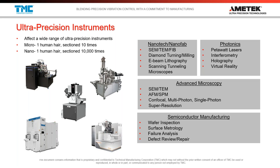Here are some examples of ultra-precision instruments we're talking about. In the nanotech and nanofab field, we have scanning electron microscopes, transmission electron microscopes, NMRs, and advanced microscopy equipment like confocal and single photon microscopes. In photonics, we have petawatt lasers and long light path experiments. In semiconductor manufacturing, wafer inspection and failure analysis instruments are commonly used. When we talk about the size of features being resolved — a micrometer is a human hair sectioned lengthwise 10 times; a nanometer requires 10,000 sections.